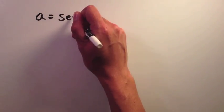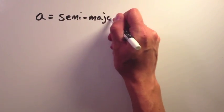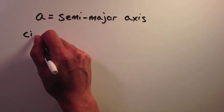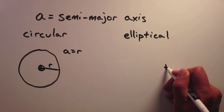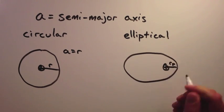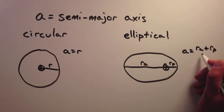A is the semi-major axis. This describes the size of the orbit. For a circular orbit, the semi-major axis is the radius of the orbit. For an elliptical orbit, the semi-major axis is the average of the radius at perigee and the radius at apogee.